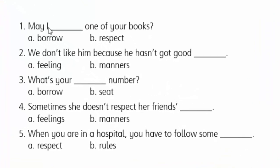Number one: 'May I __ one of your books?' The choices are 'May I borrow' or 'May I respect.' Of course, the answer is 'May I borrow.' Number two: we don't like him because he hasn't got good manners. That's right — good manners.